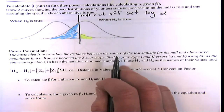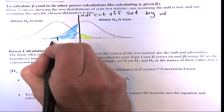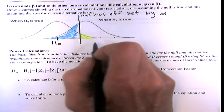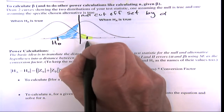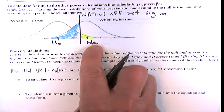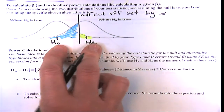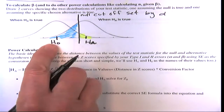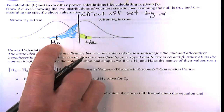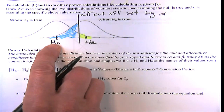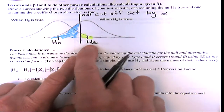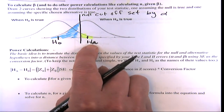The basic idea is to translate the distance between the two curves — between H-naught and H-a — into standard units. This distance in actual units (like percent reduction) gets converted to z-scores. In z-score terms, we call this H-naught our specified null value and H-a our specified alternative value. The null cutoff sets a distance z_alpha from the null center.